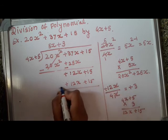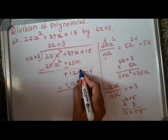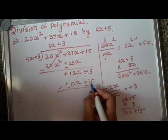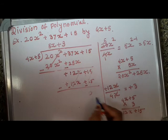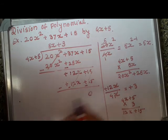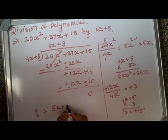Do the subtraction. For this we will change the signs here. Plus 12x minus 12x will get cancelled. Plus 15 minus 15 will get cancelled. The remainder will become 0. So the quotient in this case is 5x plus 3 and remainder is 0.